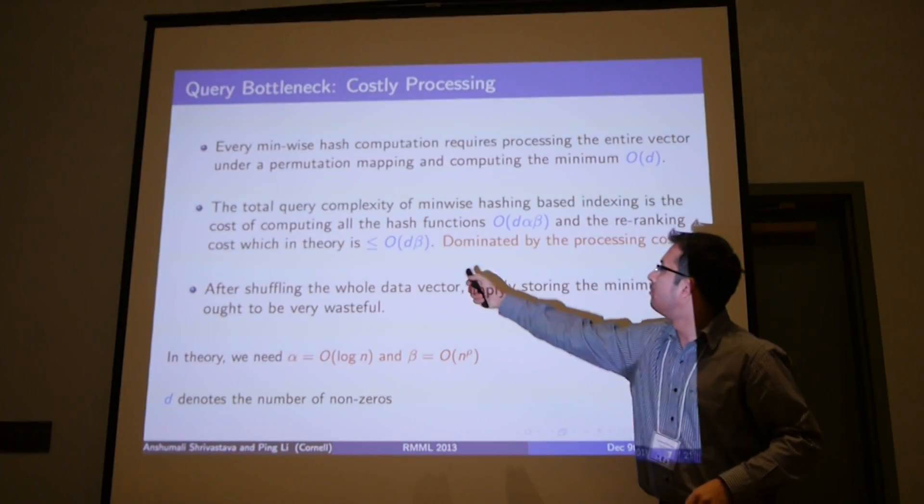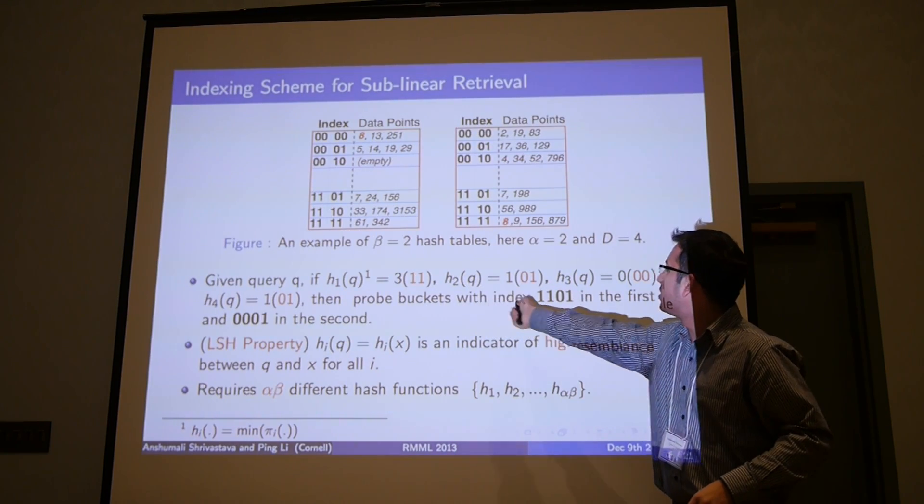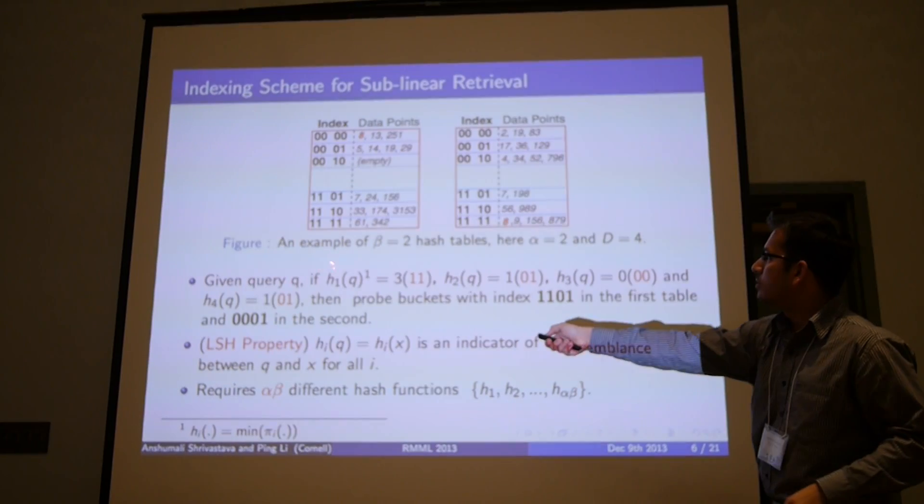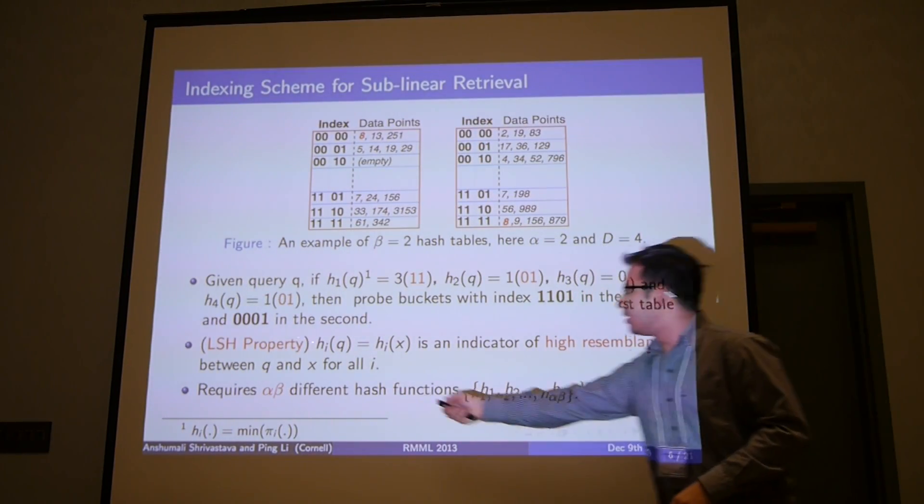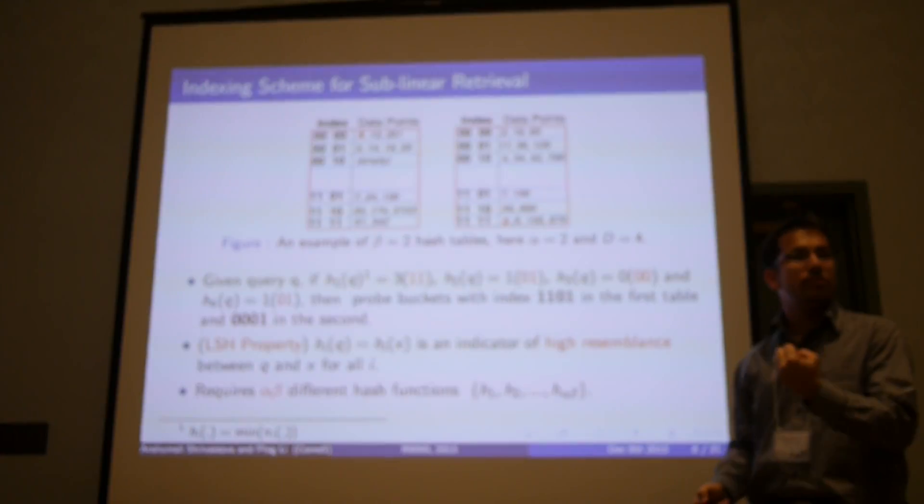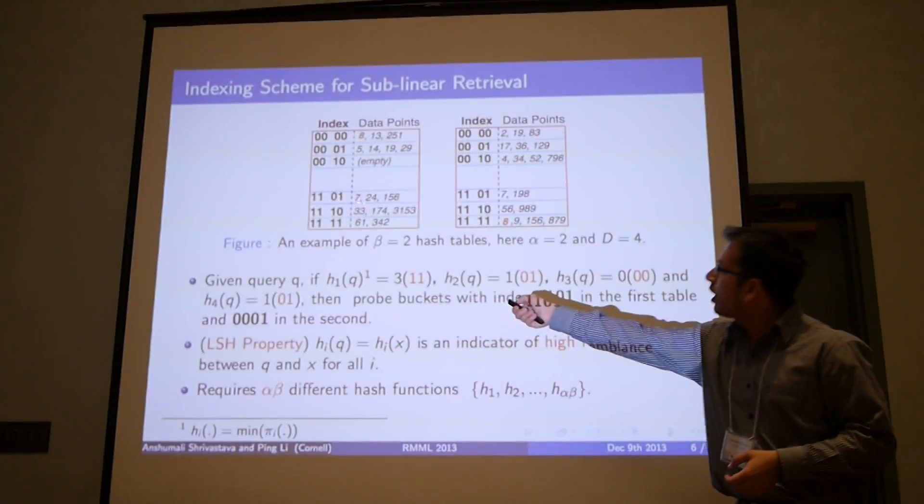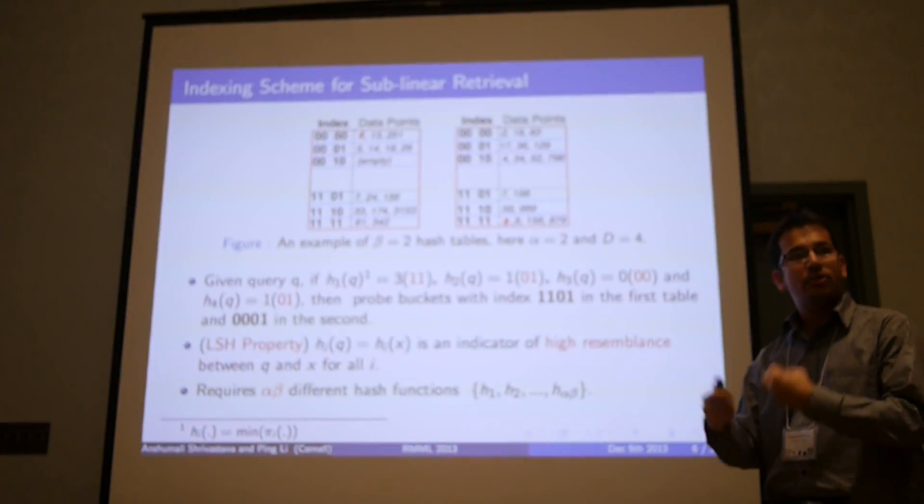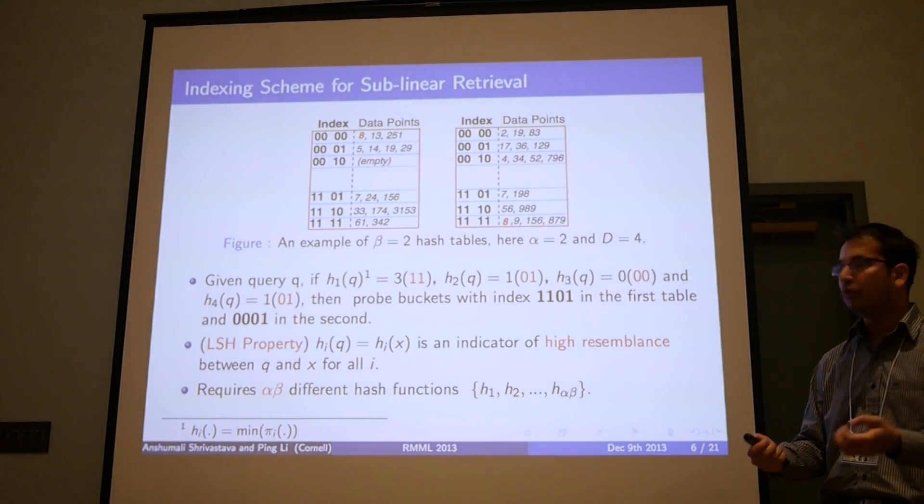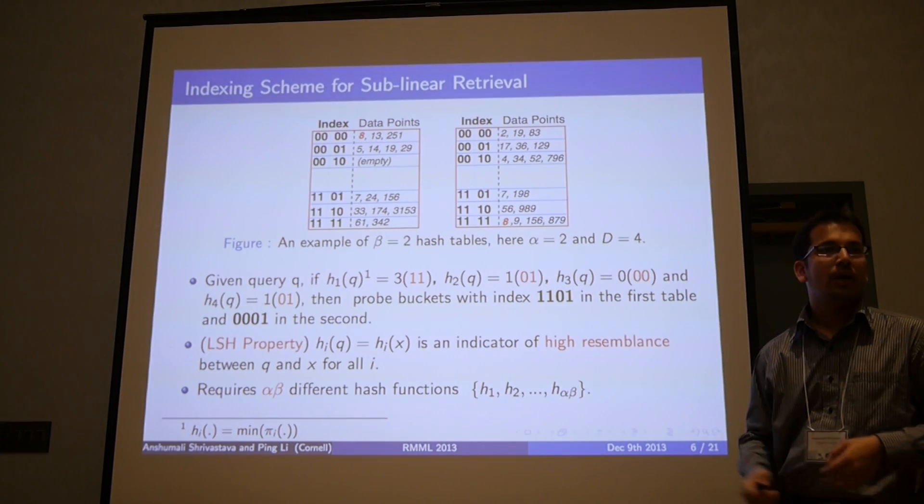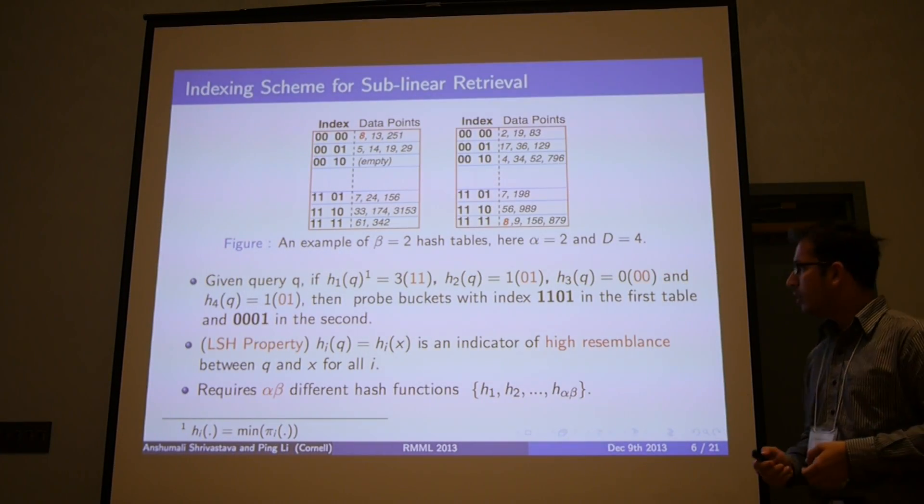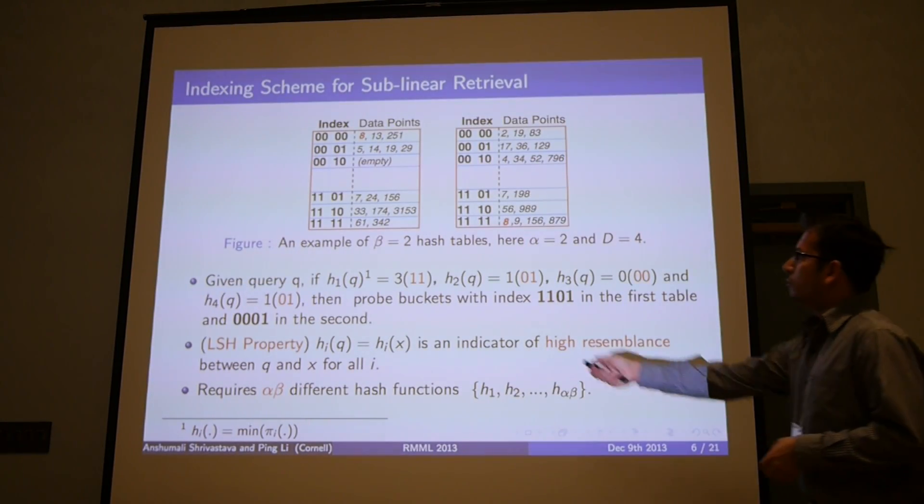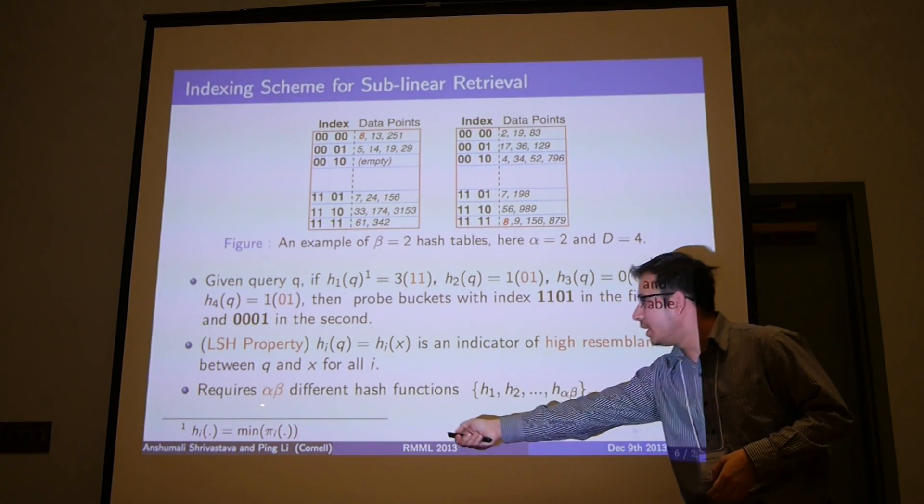Suppose I'm given a query, then I'll apply those same four hash functions. Suppose I get 3, 1, 0, and 1. Then I'll look at the binary representation. I find this is 1, 1, 0, 1, so I'll probe this bucket. And this is 0, 0, and 1, so I'll probe this bucket. Remember that we know that the hash collision is actually an indicator of a similarity between the query and the element. I'm more likely to find similar elements to the query in the corresponding buckets than random. This idea can actually be converted into a sublinear rigorous proof by appropriately tuning these parameters α and β. This was the original 98 paper of locality-sensitive hashing, and this property is also known as LSH property. One thing to note is that if the parameters are α and β, then I need α times β different hash functions.